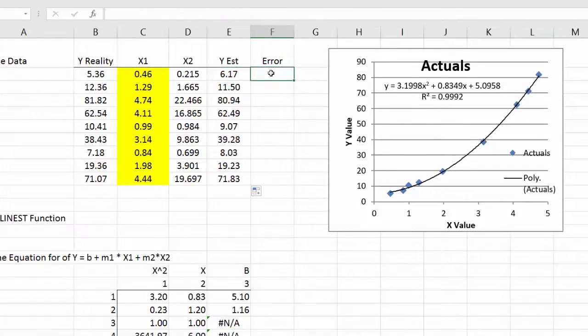So I think that looks right. And then I can copy that down this way. And then I calculate the error as equal to my estimate minus my reality.